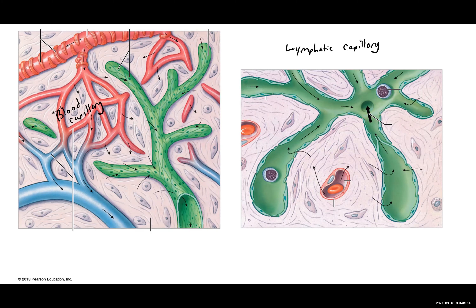We can see the origin of the lymph. What we're seeing is the fluid — water, electrolytes, nutrients, oxygen, hormones — all of these materials will leave the blood capillary, as we discussed in the cardiovascular system, and move across the tissues. When that fluid moves across the tissues, we call it either interstitial fluid or extracellular fluid. Some of that extracellular fluid will actually move into our lymphatic capillary, and as soon as that fluid enters the lymphatic capillary, we refer to it as lymph.